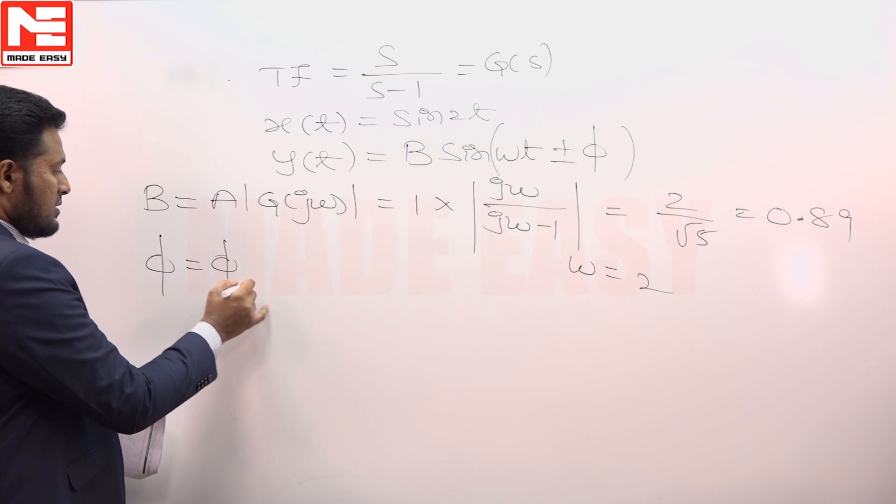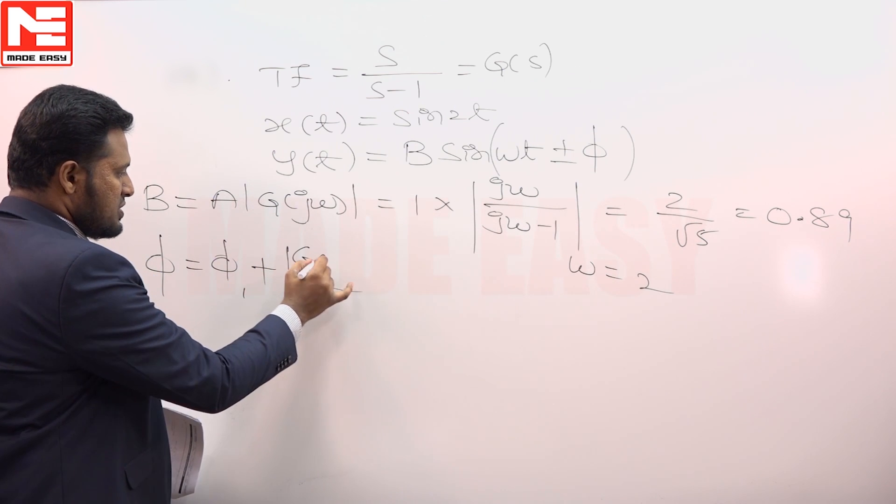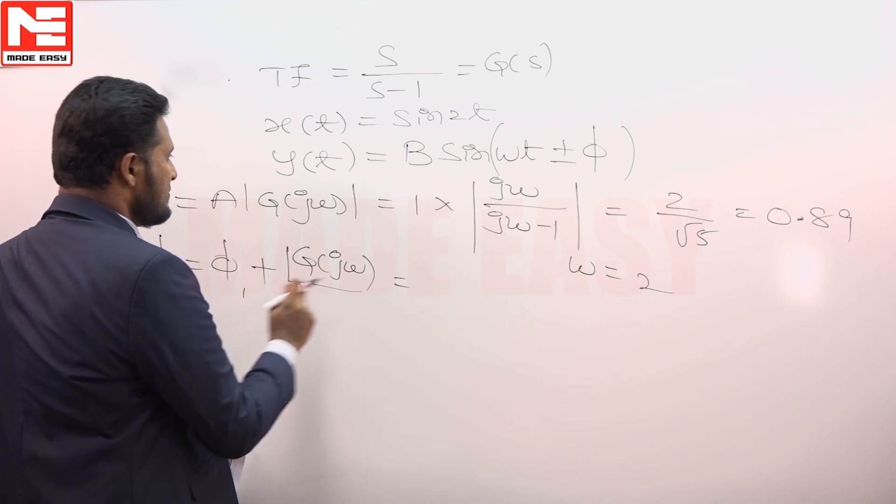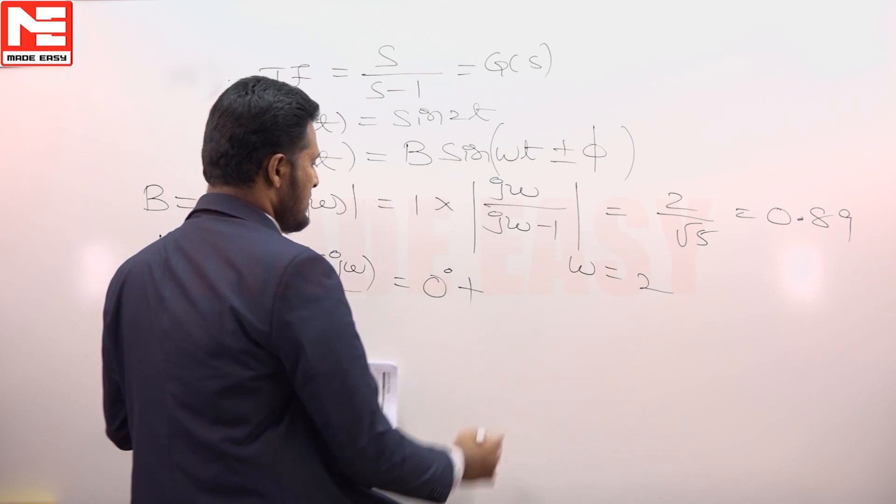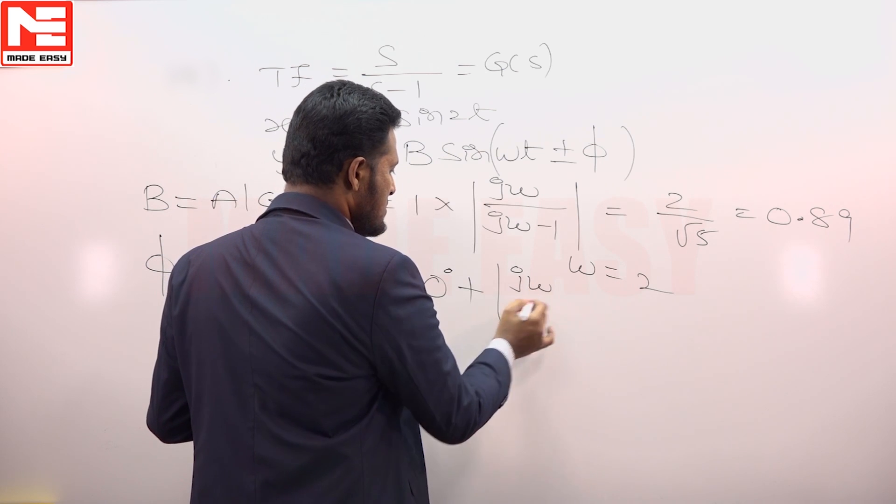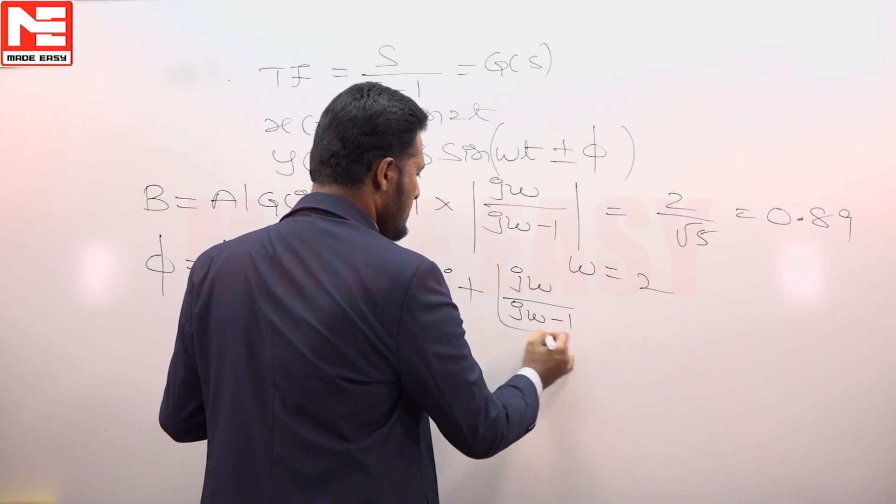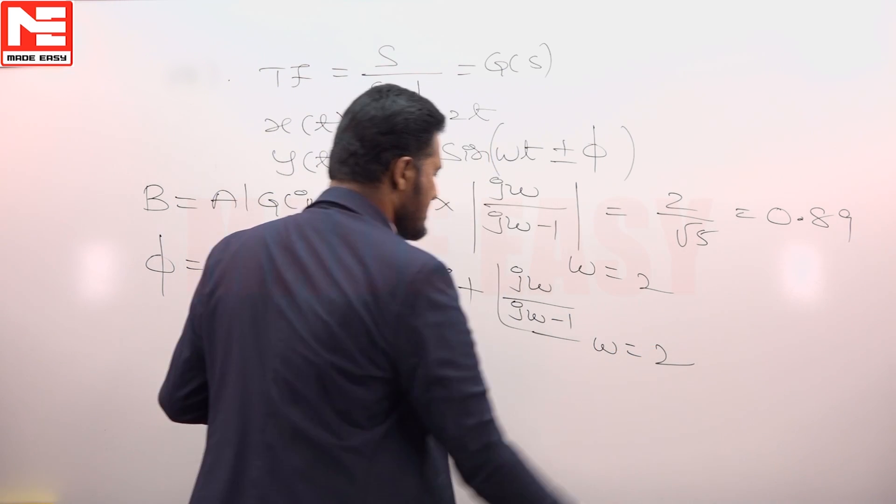The phase φ is φ₁ plus the phase angle of G(jω). φ₁ is the input phase shift which is 0°, plus the phase angle of the system jω/(jω-1) for ω equals 2.